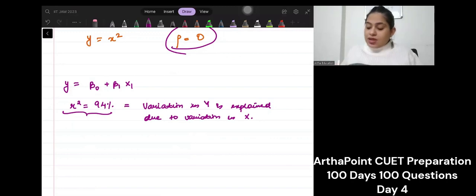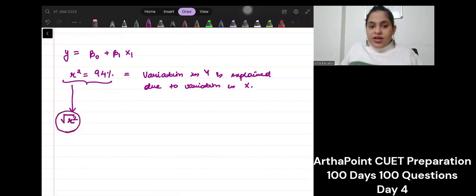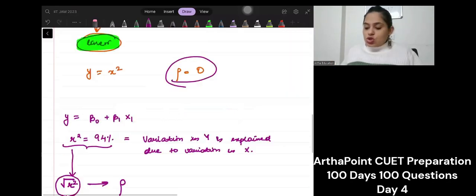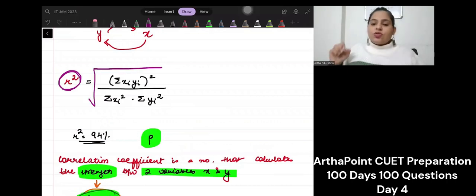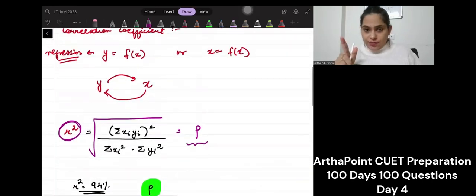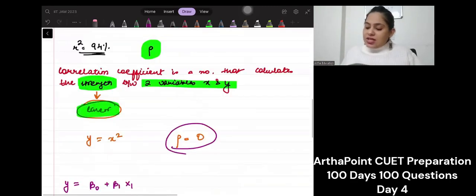Now what do we want to say? When we find the under root of this r square, then that is equivalent to rho. So when I use the formula of r square and I find the under root of this, this is my correlation coefficient. So correlation coefficient is a dual way relationship. It tells me the linear strength between two variables x and y.